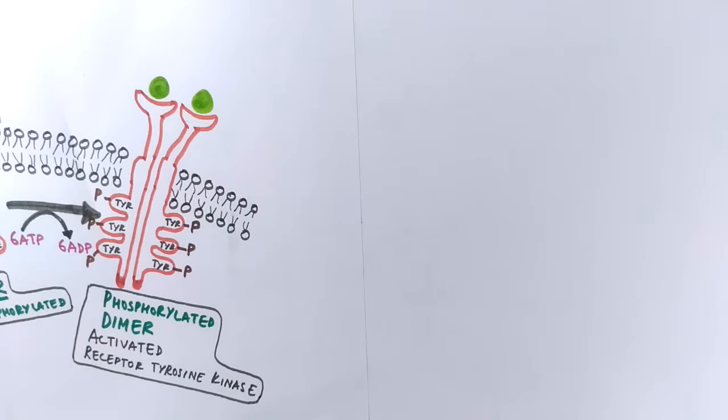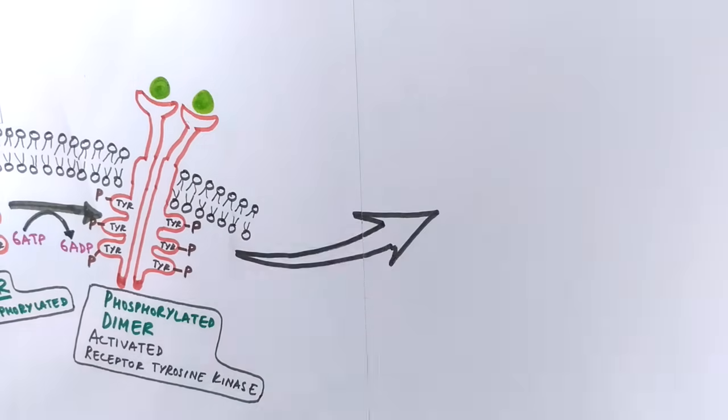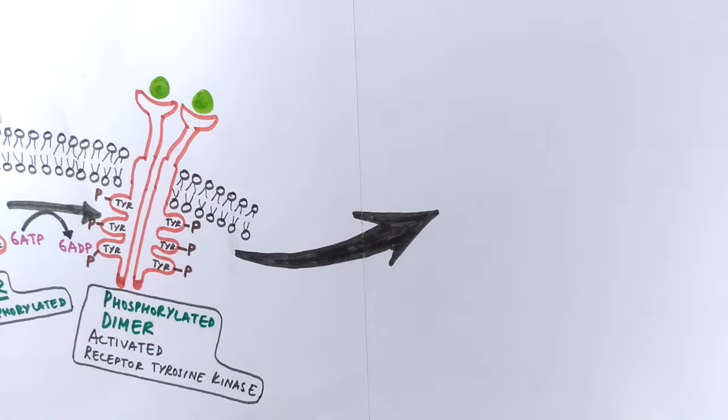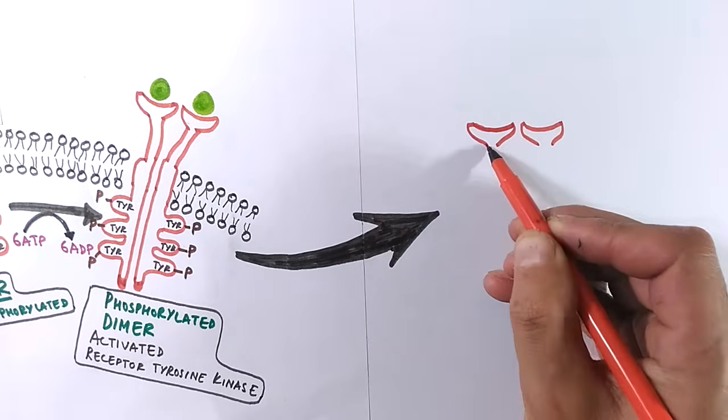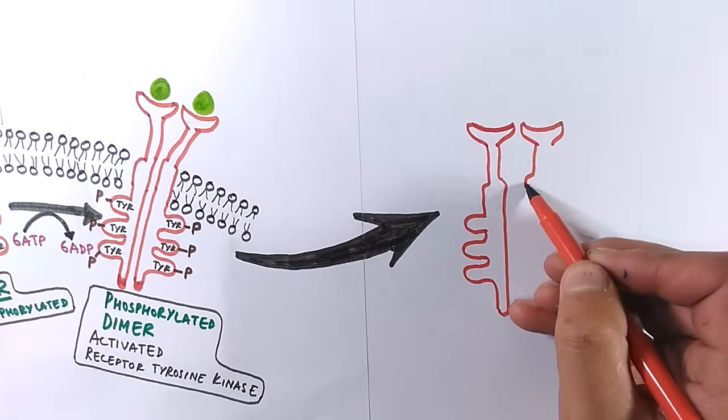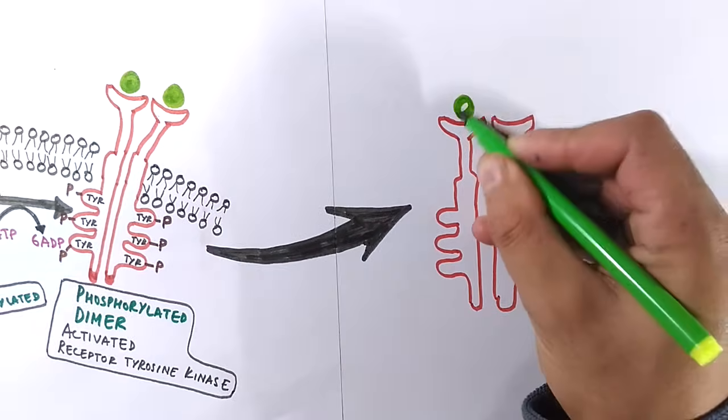Now that the receptor is fully activated, it's recognized by specific relay proteins inside the cell. Each such protein binds to a specific phosphorylated tyrosine, undergoing a resulting structural change that activates the bound protein.